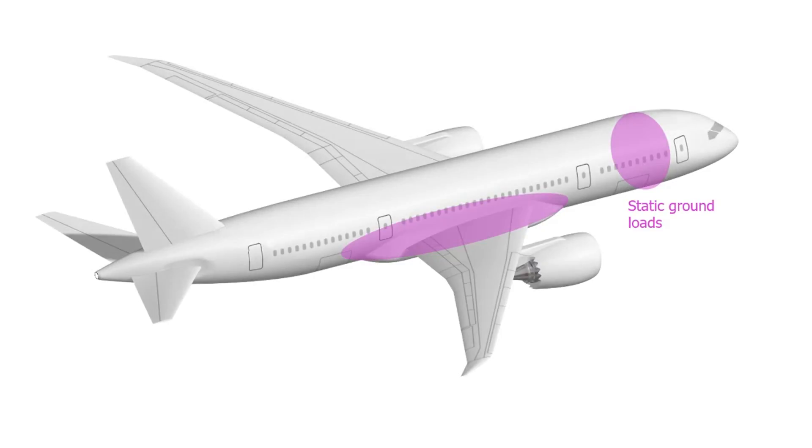First we have the static ground loads. These can be quite significant close to the landing gears. Then we have the downward bending of the fuselage due to the weight of the fuselage and wing structure, creating tensile stresses on top of the fuselage and compression at the bottom.